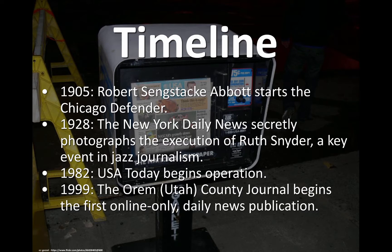In 1905, Robert Sengstacke Abbott started the Chicago Defender, which was the first African-American newspaper of note in the United States. In 1928, the New York Daily News, which continues today, secretly photographed the execution of Ruth Snyder. She was the first woman to die in the electric chair, and that was a key event in what's called jazz journalism — the tabloids of the day, which emphasized more graphics and photographs.